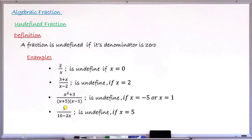The last example is seven over (10 minus 2x). This fraction will be undefined if x equals five, because substituting x by five gives ten minus two times five, which is ten minus ten, and the denominator becomes zero. So this is the definition of an undefined fraction — it is simply a fraction whose denominator equals zero.